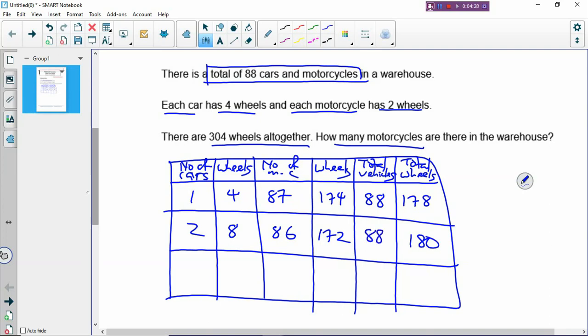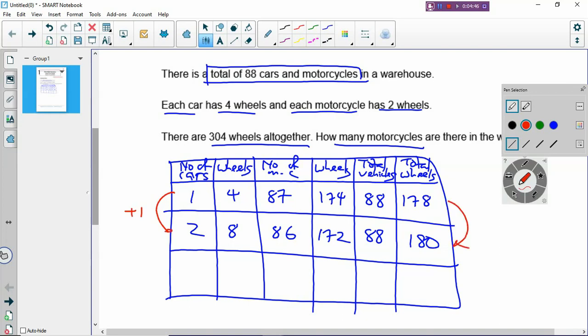Now the third row, you have to get the answer already. So how exactly do we do that? The first two rows is to help you to find a pattern. So how do we get the pattern? You compare the two rows, the first two rows. If you increase by one car, then the wheels will increase by two. Every time you increase one car, there will be two more wheels.